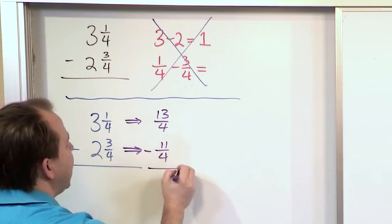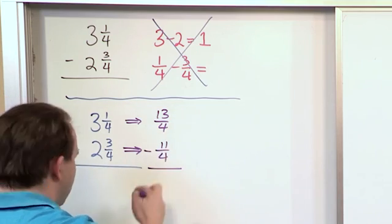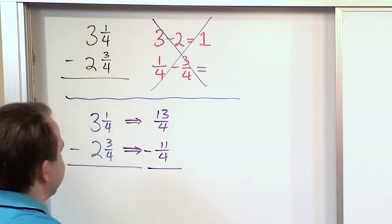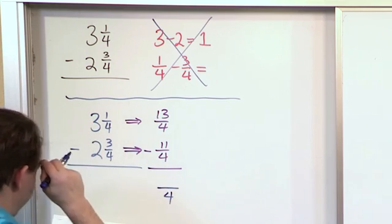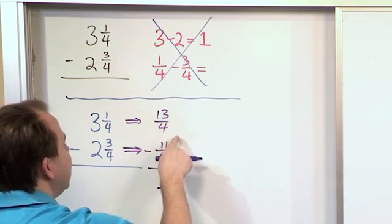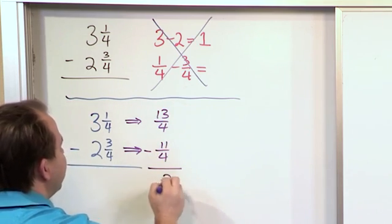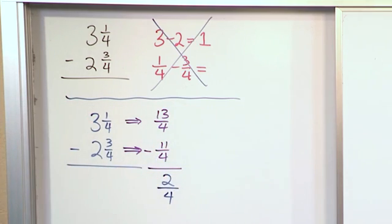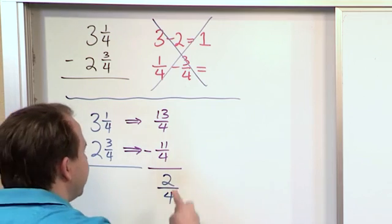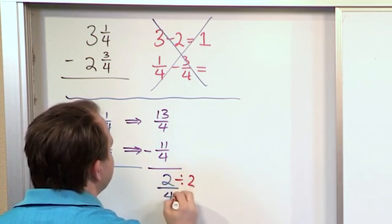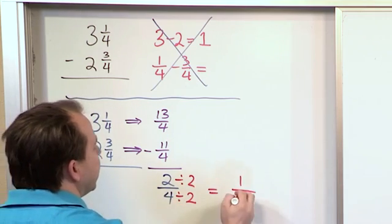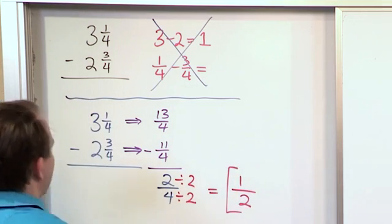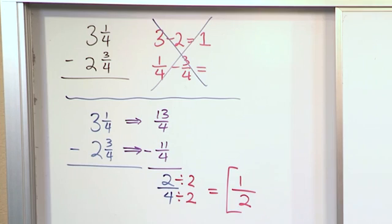And now you simply subtract them. Notice we already have a common denominator in this case, which is 4. So we'll keep the 4 in the answer. And then we'll have 13 minus 11, which will give us 2 fourths. We could circle that, but then we realize we can simplify this. We can divide the top by 2 and the bottom by 2. 2 divided by 2 is 1, 4 divided by 2 is 2. The answer is 1 half.